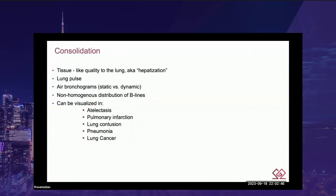For consolidation evaluation, you're looking for a tissue-like quality to the lung — what we call hepatization. Instead of a gray ambiguous appearance, the lung looks like a solid organ. These patients often have lung pulse because the lung is not well aerated. You may see air bronchograms, both static and dynamic. This non-homogenous distribution of B-lines can be visualized in atelectasis, pulmonary infarction, lung contusion, pneumonia, and cancer.